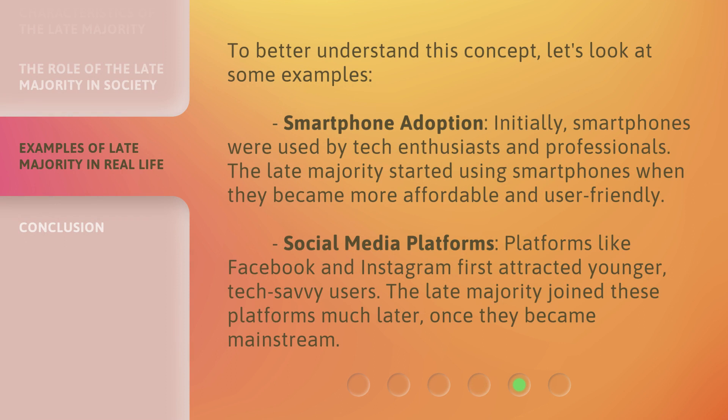To better understand this concept, let's look at some examples. Smartphone adoption: initially, smartphones were used by tech enthusiasts and professionals. The Late Majority started using smartphones when they became more affordable and user-friendly. Social Media Platforms: platforms like Facebook and Instagram first attracted younger, tech-savvy users. The Late Majority joined these platforms much later, once they became mainstream.